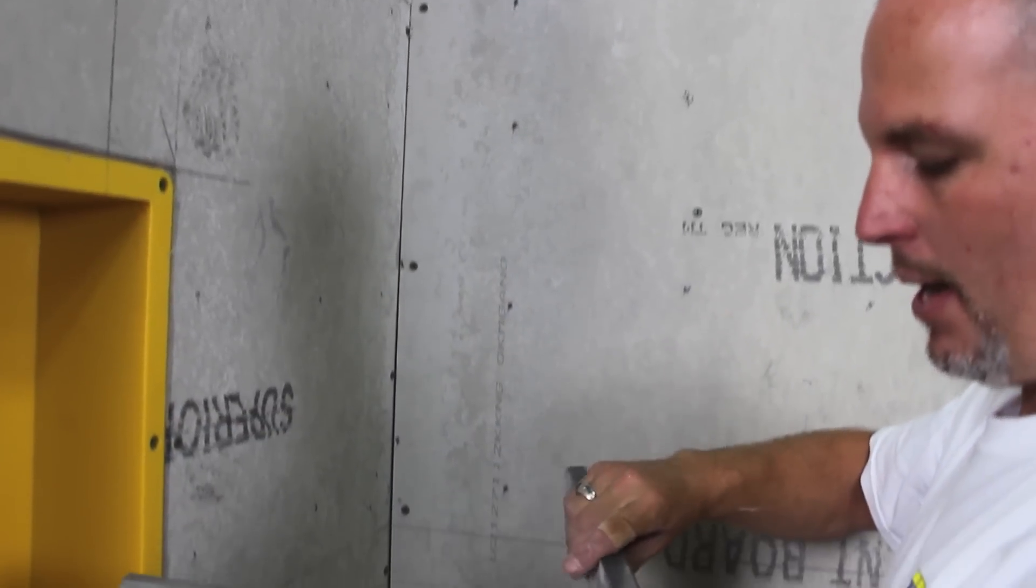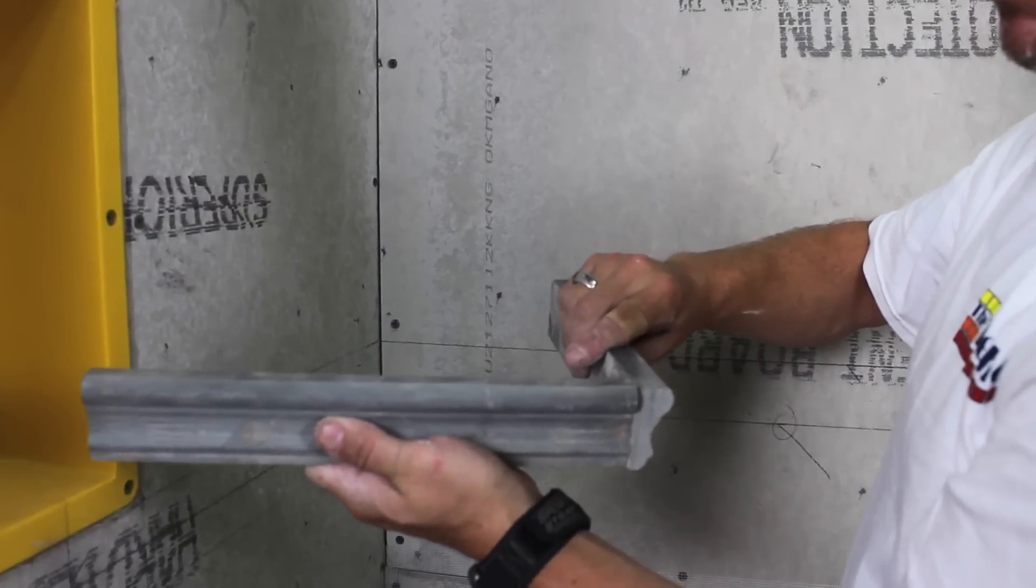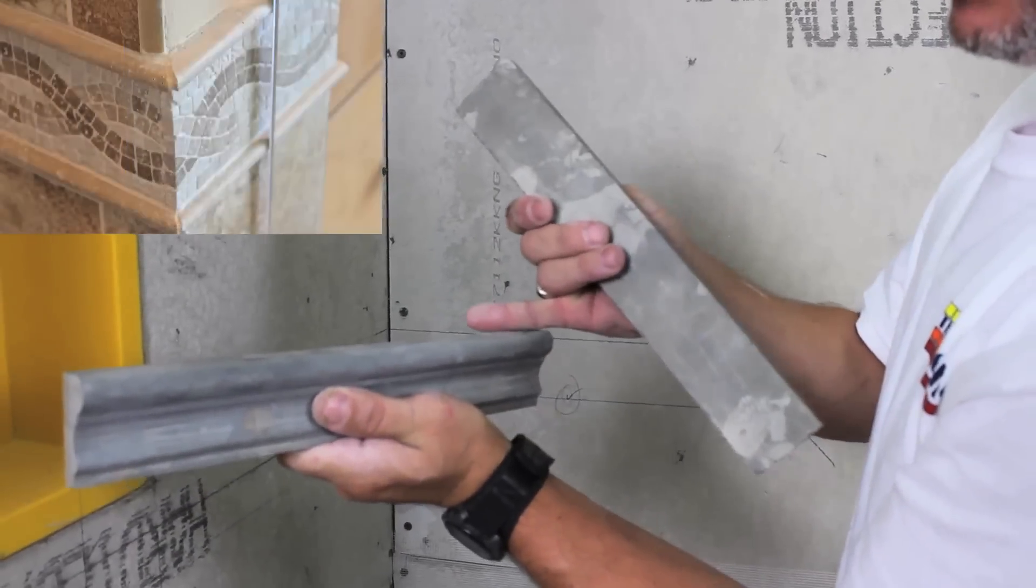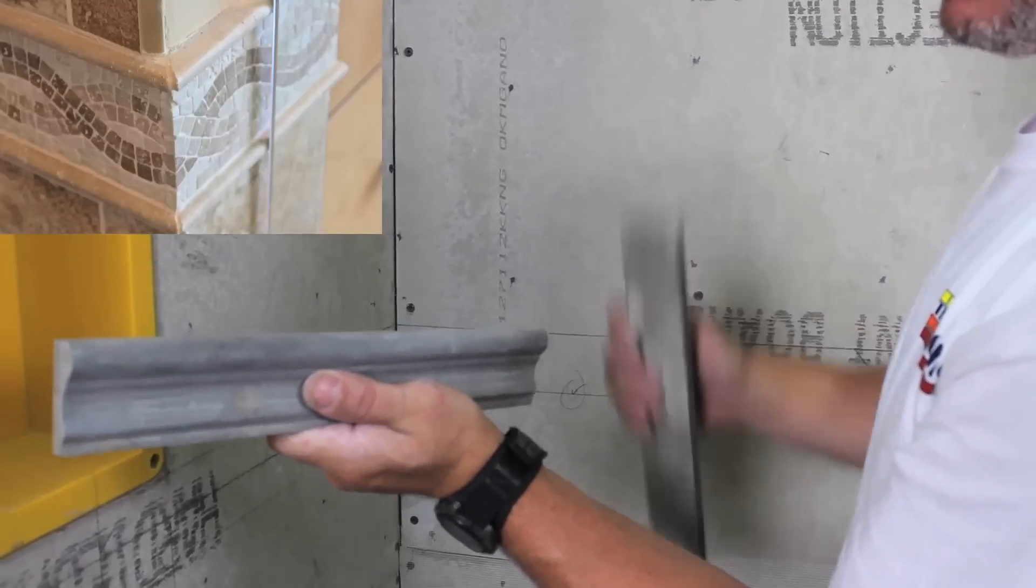If you're doing a countertop or an outside wall, we don't want to stack them because naturally that profile doesn't look very nice, so what we want to do is we want to do an outside miter and miter to the edge.